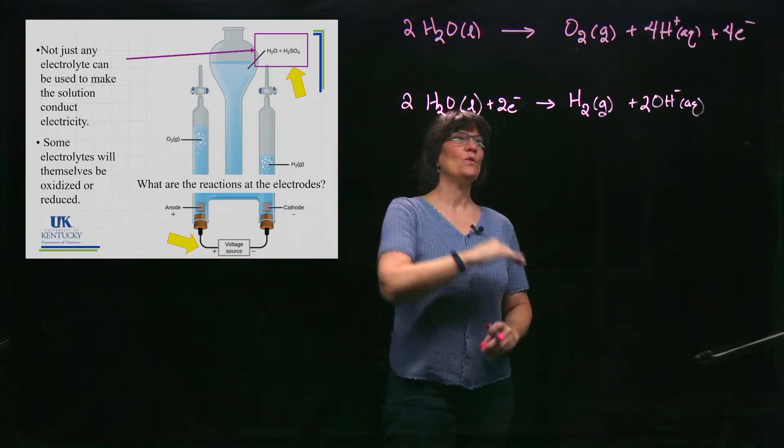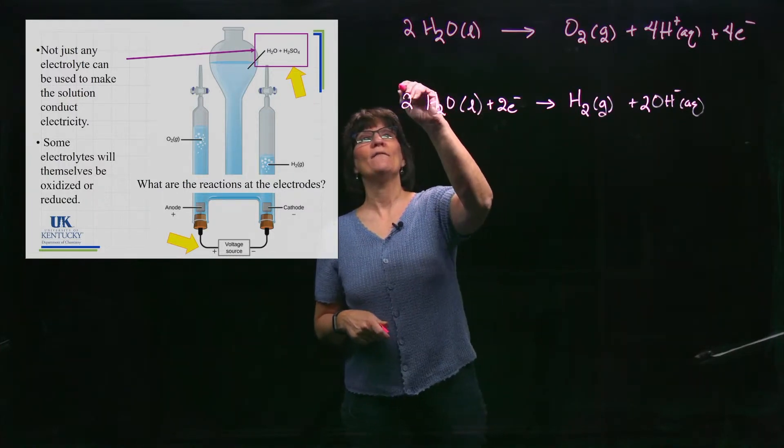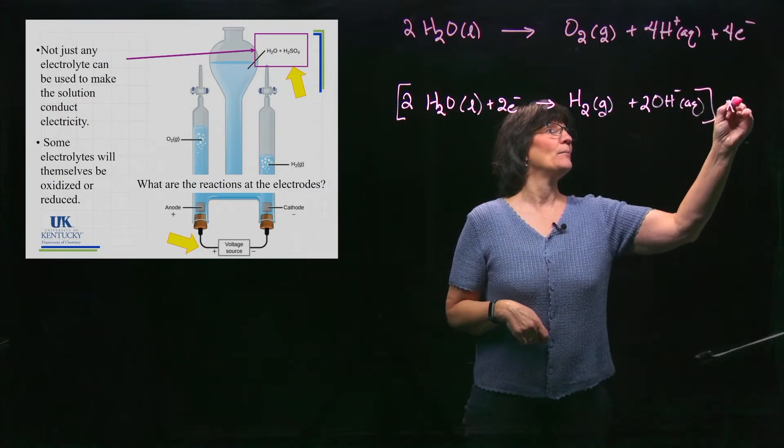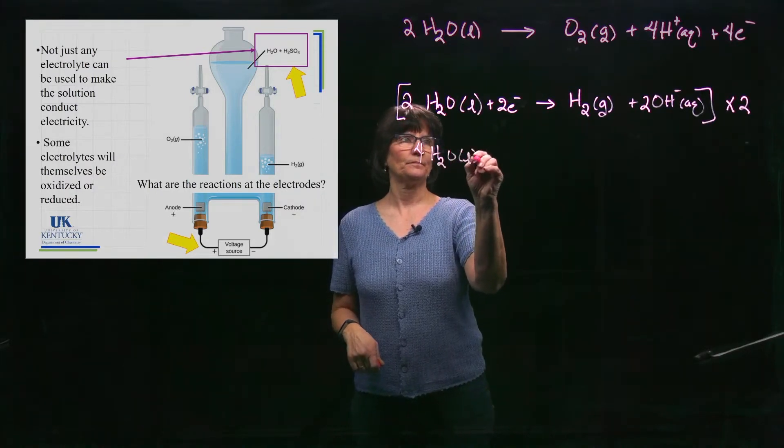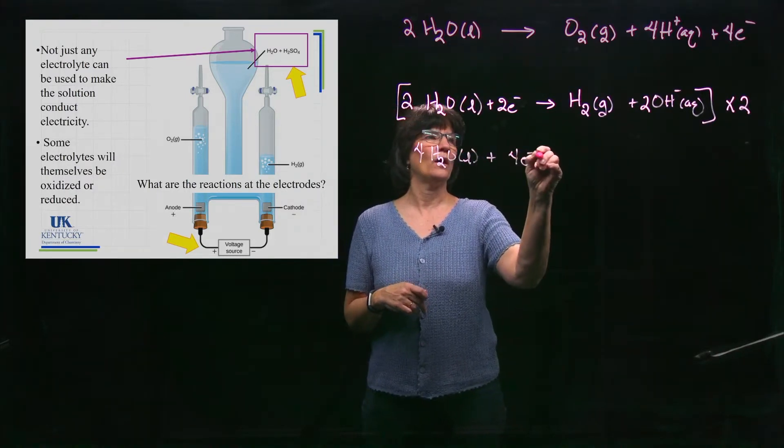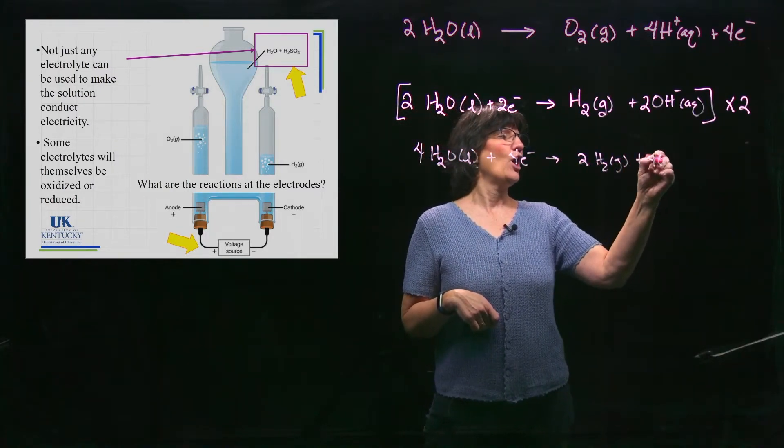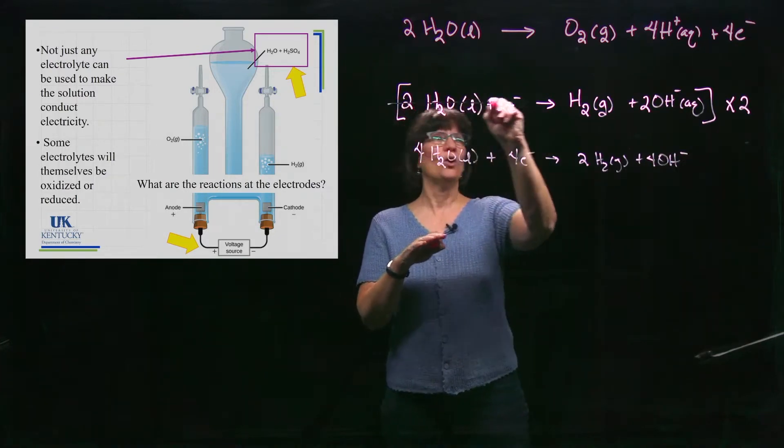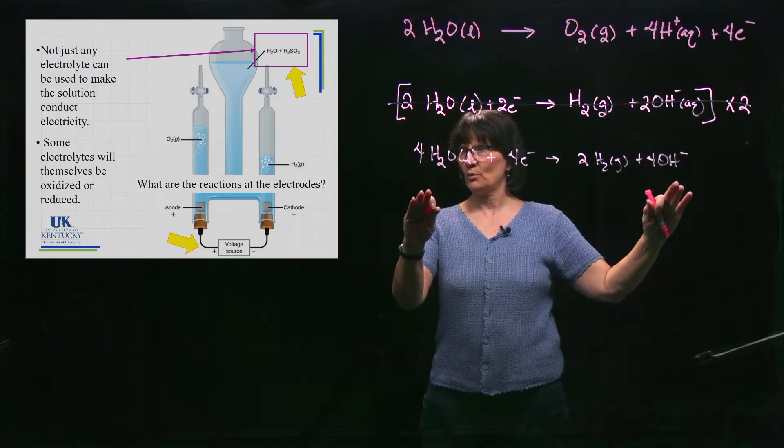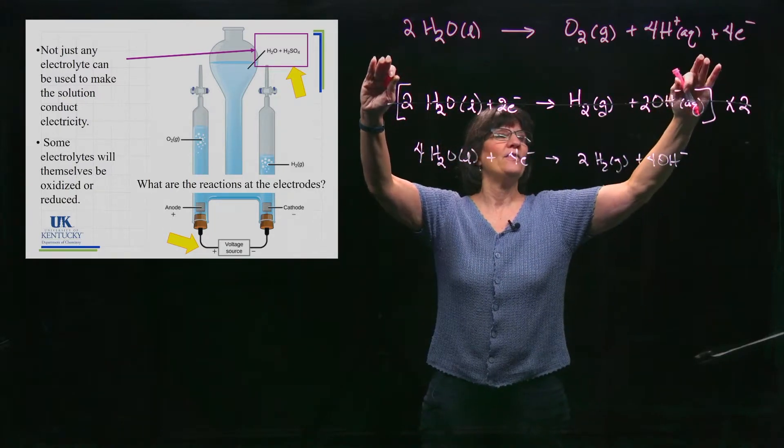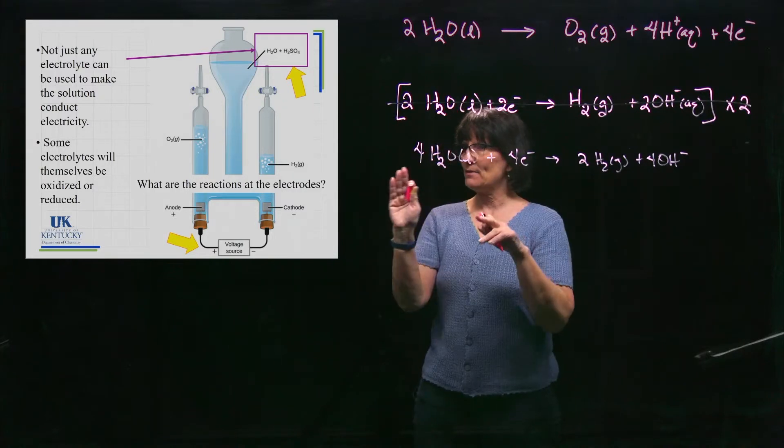I cannot add these two half cells together unless the number of electrons lost and gained are the same. So we have to multiply this one times two. That gives me 4H₂O + 4e⁻ → 2H₂ + 4OH⁻. Now we're ready to add these two reactions together. This is gaining electrons, reduction, reduction happens at the cathode.